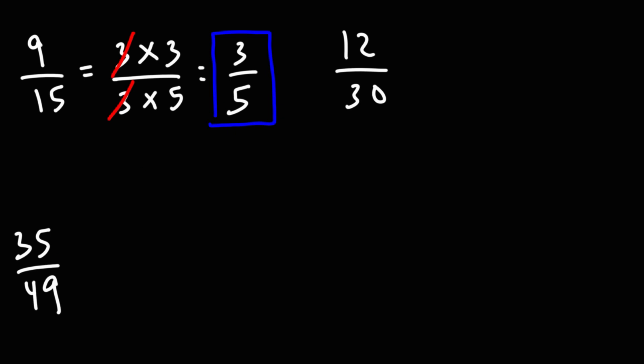Now moving on to 12 over 30. Both numbers are divisible by 6. So 12, we can write that as 6 times 2. 30, we can break that down into 6 times 5. We can cross out the 6, and we're left over with 2 over 5.